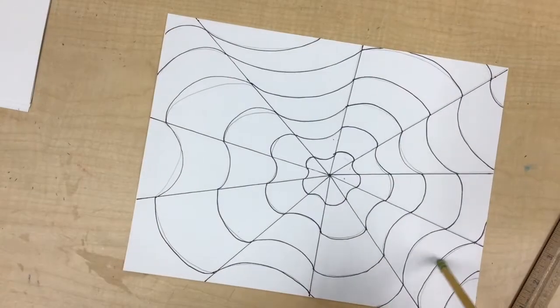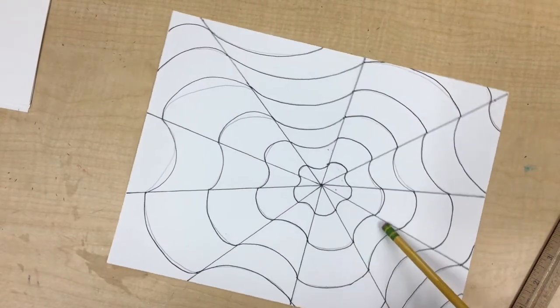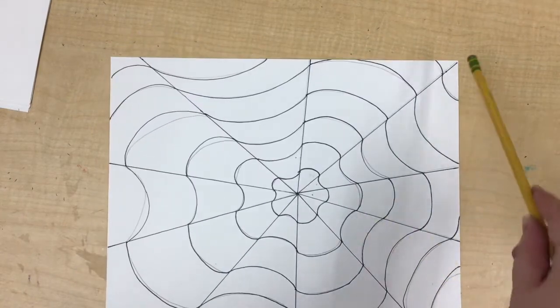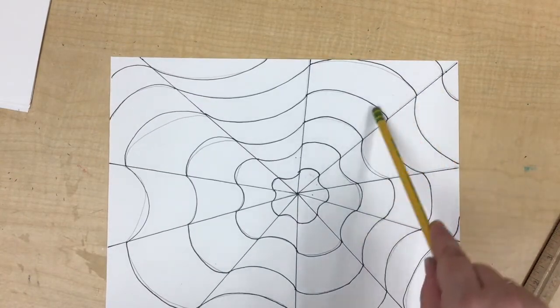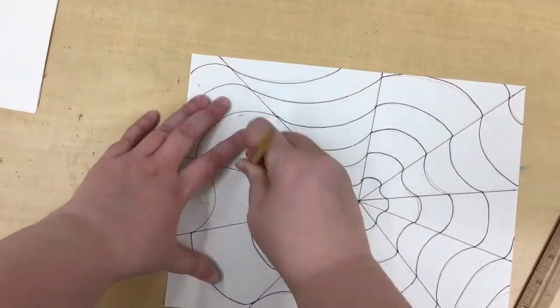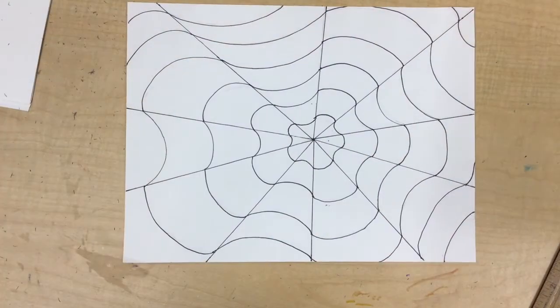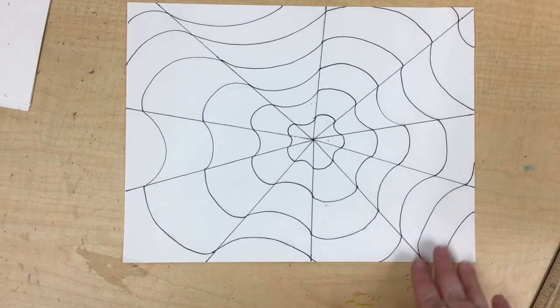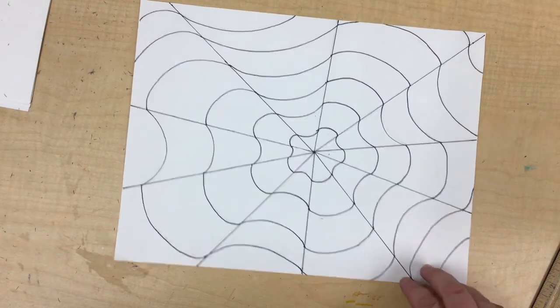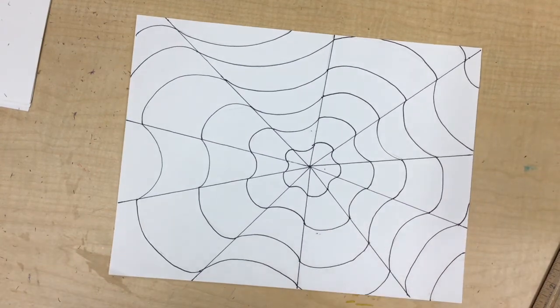The final step with this one is to take your eraser and slowly erase all of your pencil marks. Start on one side and work your way around it. You can see the next video to learn how to color and shade to make this an optical illusion.